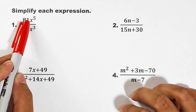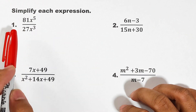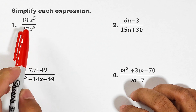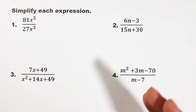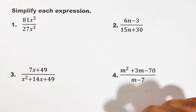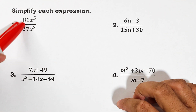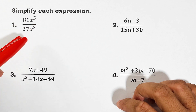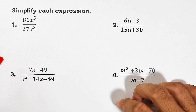In number one, we are given 81x raised to the fifth power over 27x raised to the third power. There are two things you need to do in simplifying this kind of expression: first, you need to simplify the numbers; second, you need to simplify the variables.